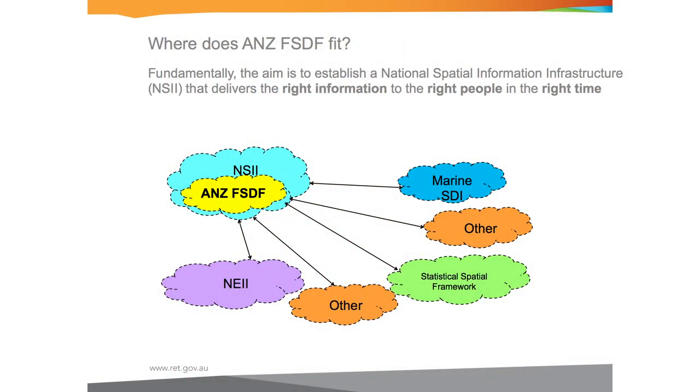We have the ANZ Foundation Spatial Data Framework — the diagram I put up first — which sits front and centre in the middle of a national spatial information infrastructure, and that is our first piece of work. Our second piece of work, to be released in March, is an Australian spatial data directory which Geoscience Australia is currently building on our behalf. It will be the linking metadata point at which people can access spatial information through a search mechanism, provided the metadata is appropriately loaded.